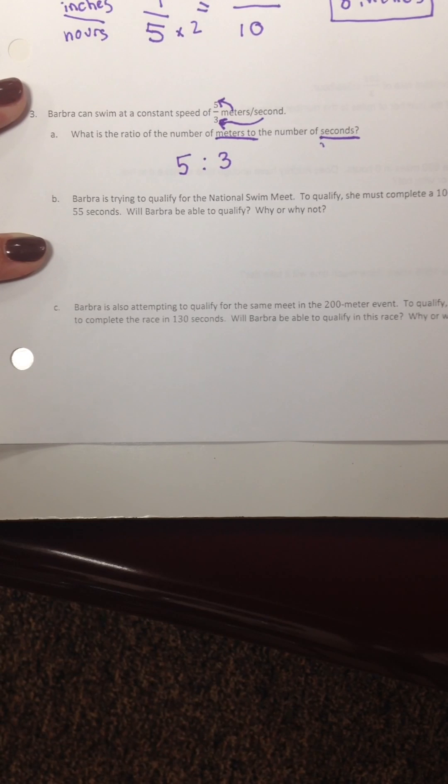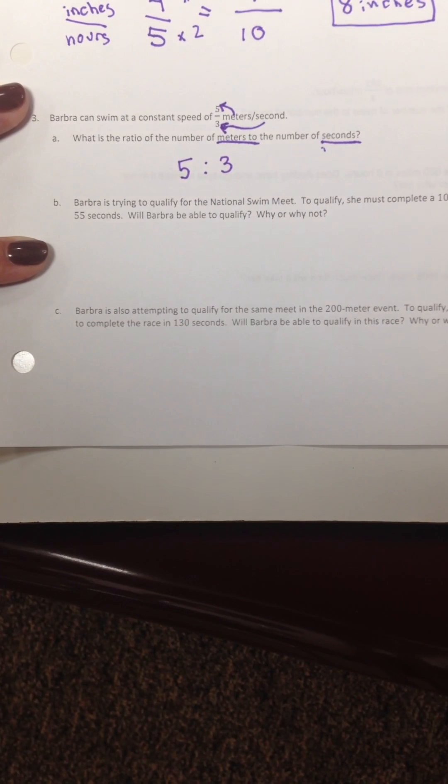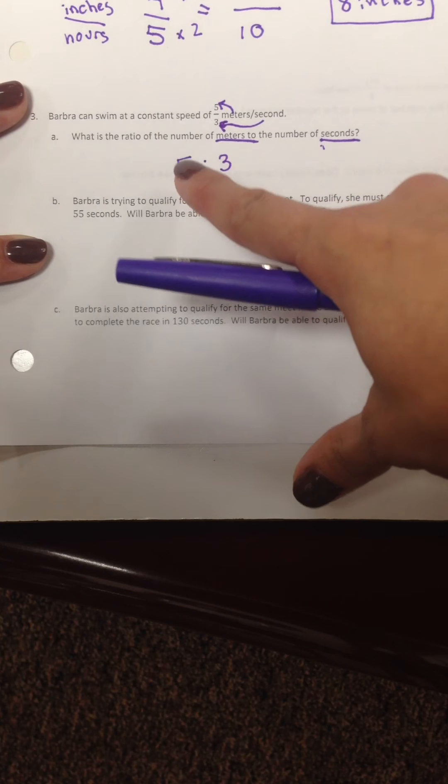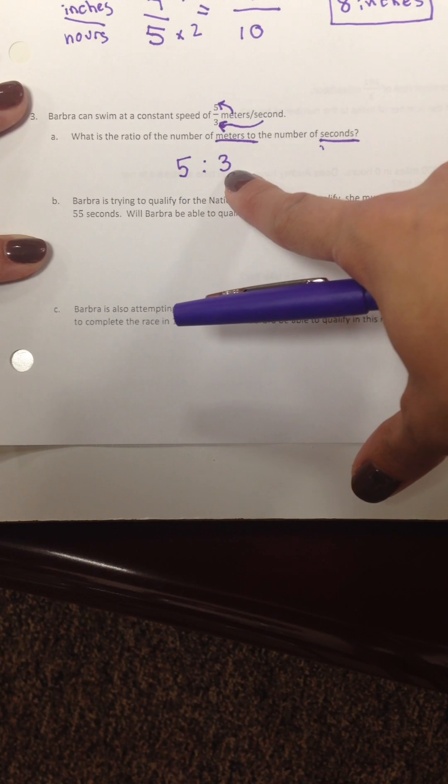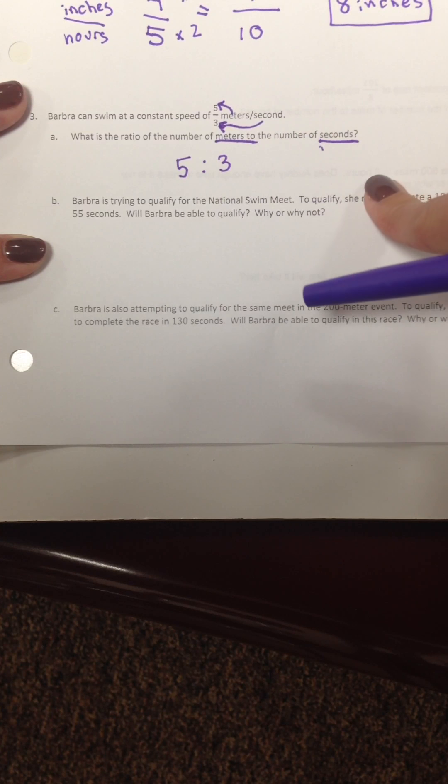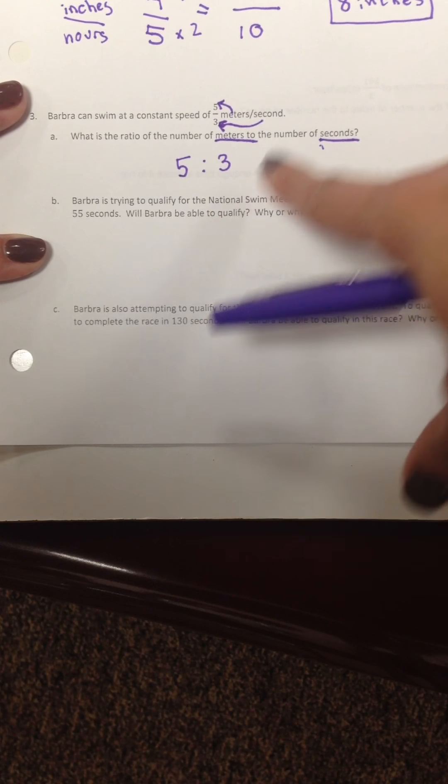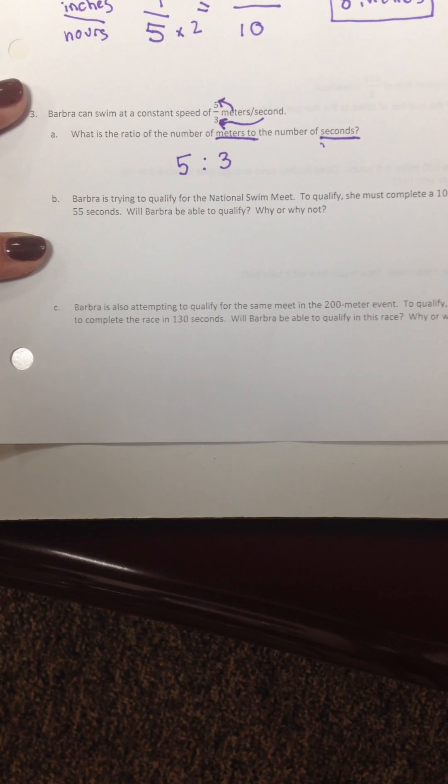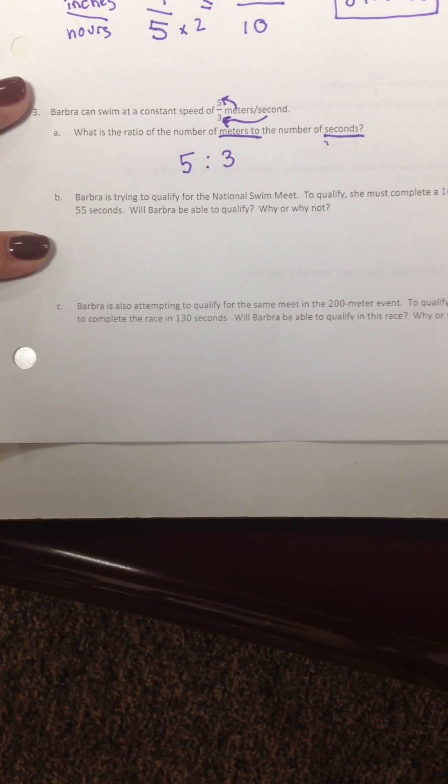Another thing to remember is that there are many equivalent ratios. If she's swimming 5 meters in 3 seconds, that means she's swimming 10 meters in 6 seconds, 100 meters in 60 seconds. There's lots of equivalent ratios. Moving on to part B. So that's your answer for A.